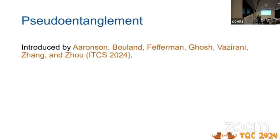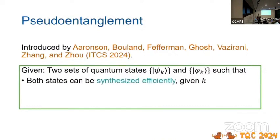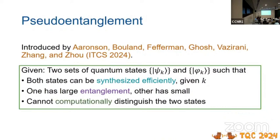So what is pseudo-entanglement? It's a concept that was introduced by the set of authors quite recently. The idea is: I'll take two sets of quantum states, psi sub k and phi sub k. Both states can be synthesized efficiently, and one has large entanglement and one has small entanglement. But you cannot computationally distinguish these two states. So I'll give you copies of one of these two sets of states, either psi k or phi k, and you can't tell which one it is.